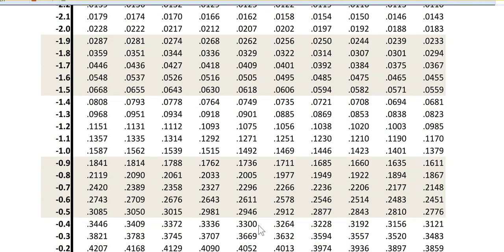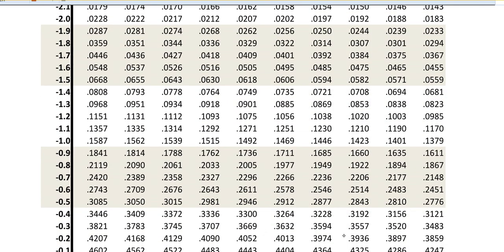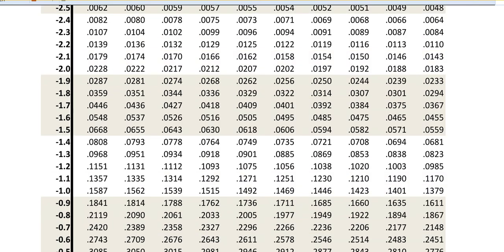Keep going down. 0.345. This one looks like it's probably the closest option. So Z is going to be negative 0.40.